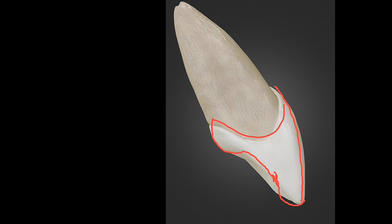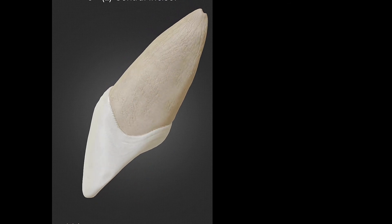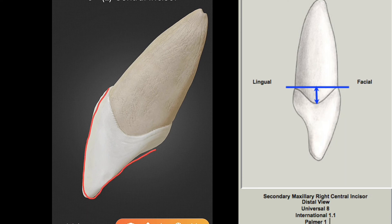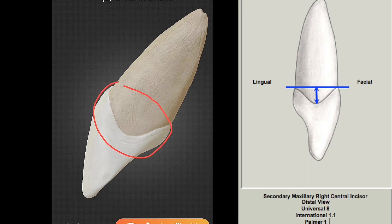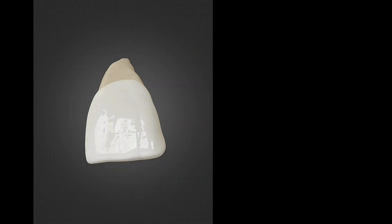Now let's see the distal aspect. This is again a wedge or triangular shape. It has the greatest facial-lingual width at the cervical third. The labial outline is slightly convex as on the medial side, slightly convex at the cingulum, concave at the marginal ridge, and slightly convex at the incisal area — just like the medial side.